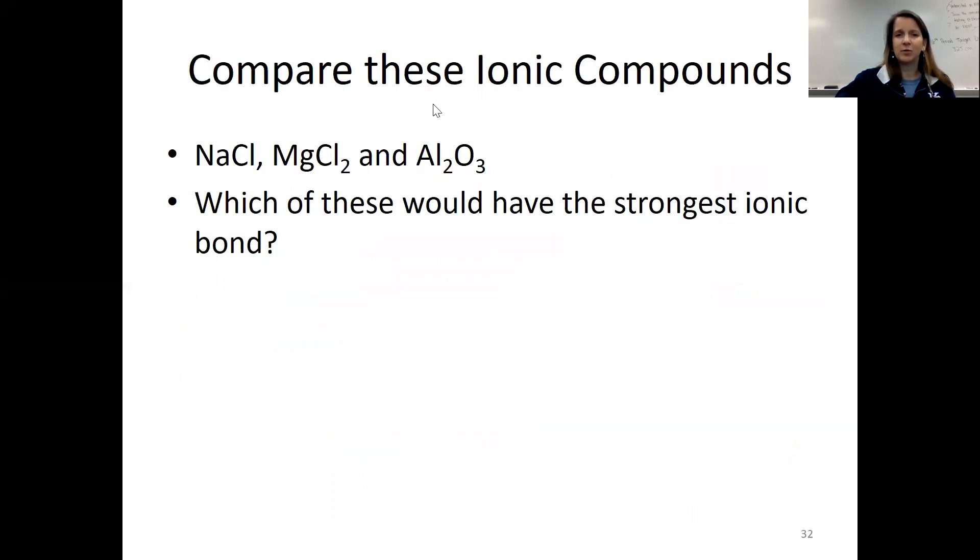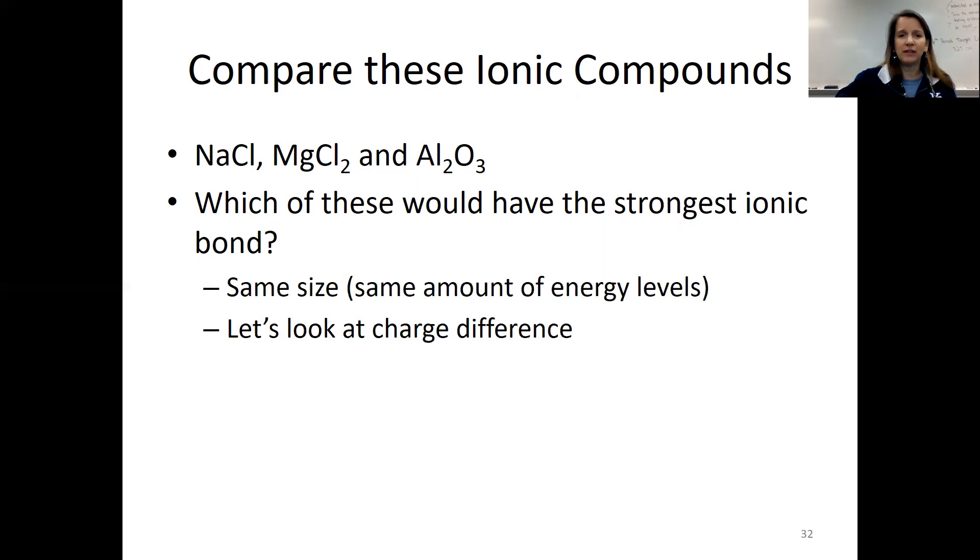So what does this all mean? Let's take a look. So we're going to compare these ionic compounds, NaCl, MgCl2, and Al2O3. We're going to ask ourselves, which of these has the strongest ionic bond? Well, all three of these are roughly the same size. They're all found in the same period on the periodic table. They all have the same amount of energy levels. So that means we're going to have to go down and look at the charge difference.